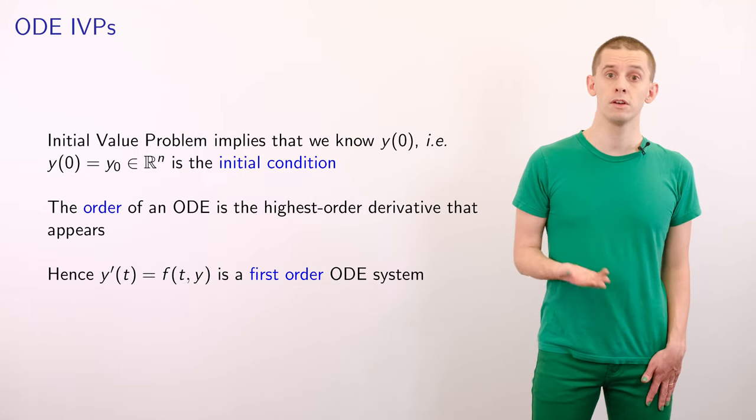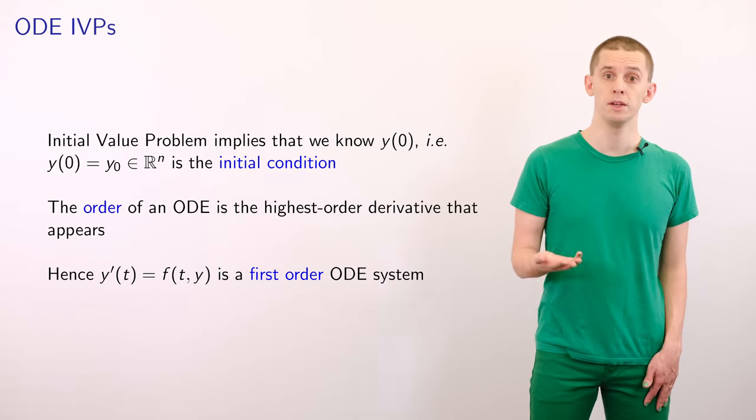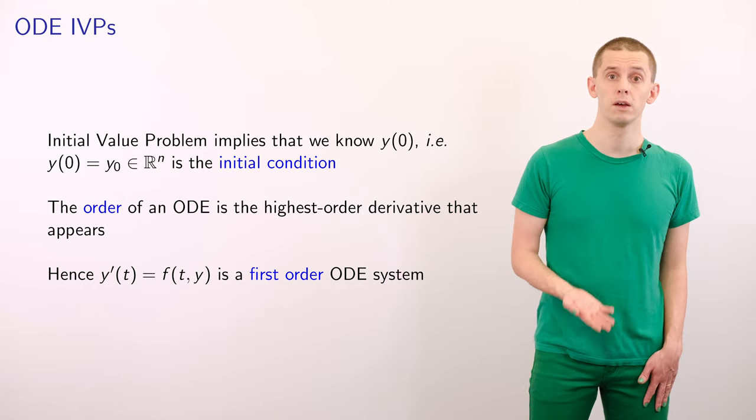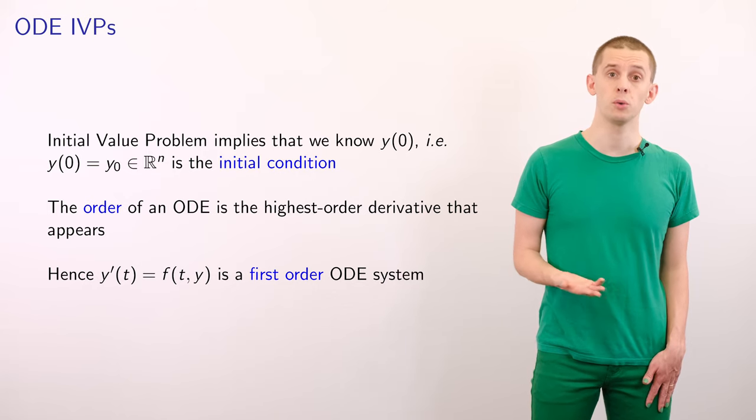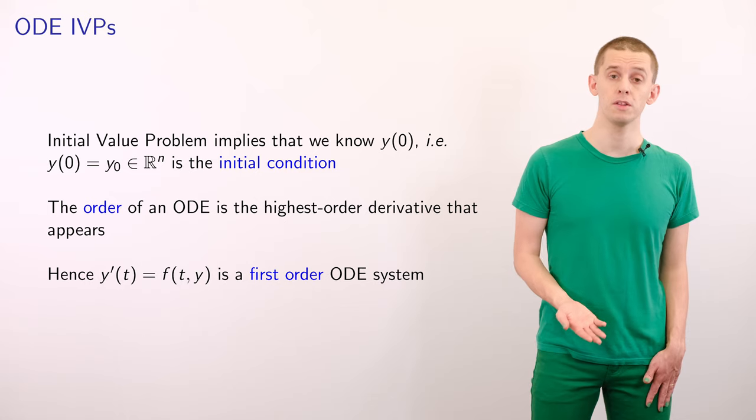And this is an initial value problem, and that implies that we know some initial data. Here, we're given that y of 0 is equal to y subscript 0, and we call this the initial condition.